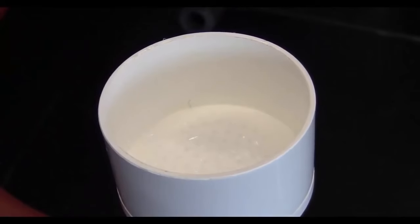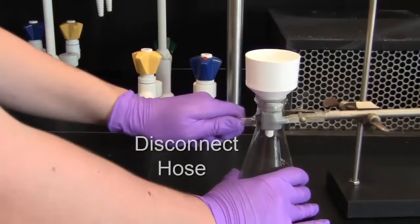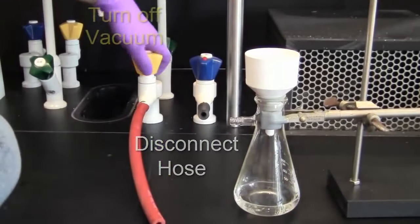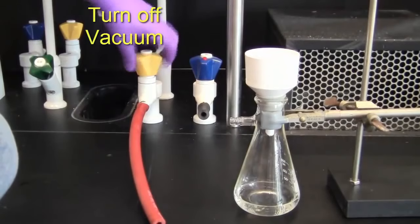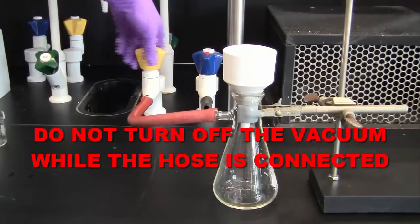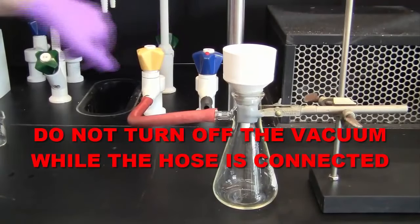After the solid has been separated from the solution, disconnect the vacuum hose first and then turn off the vacuum valve. This prevents solution from back washing into the vacuum system.